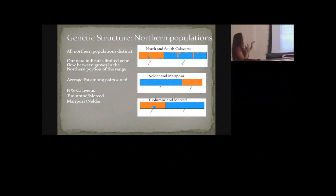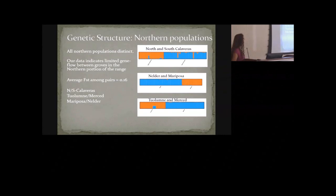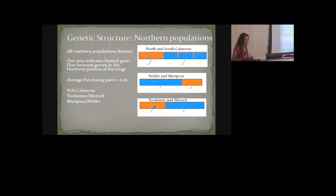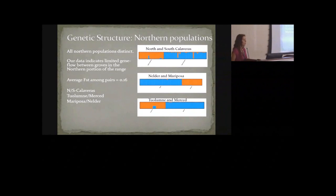Looking at a plot from a program called Structure, which groups data based on genetics without taking geography into account — if it correctly assigns individuals, it shows that the genetics of each population are distinct. There are a couple of exceptions where a few colors don't seem to belong, such as a couple of individuals at North Calaveras. Each bar represents an individual, and those probably represent gene flow events — effective gene flow, because these are actual individuals on the landscape. The story here is that these groves have been separated for a long time with very rare gene flow events among them.